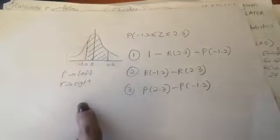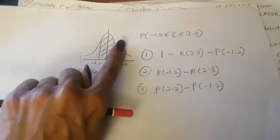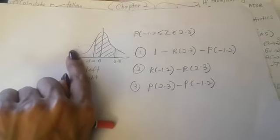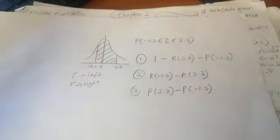The third method uses P. P is left, so you take P of 2.3, meaning you're taking the whole of this side, minus P of negative 1.2. This finds the middle. Whichever way you're comfortable with is fine.